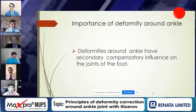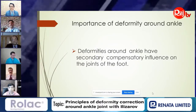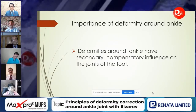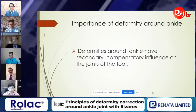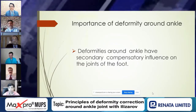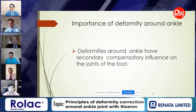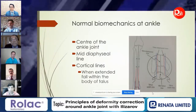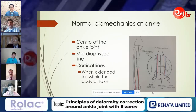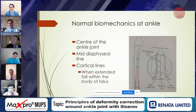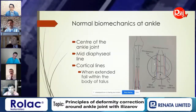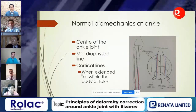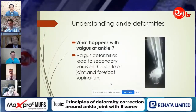This presentation highlights the principles of deformity correction around the ankle. Deformities around the ankle have secondary compensatory influences on the joints of the foot, so it's very important to understand what happens with these deformities and their secondary influences. To understand the actual biomechanics, we must know the center of the ankle joint - from the plafond or the center of the talus - the mid-diaphyseal line, and the cortical lines of the tibia.